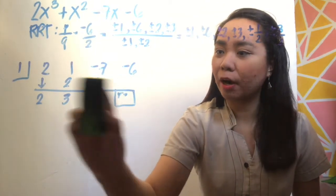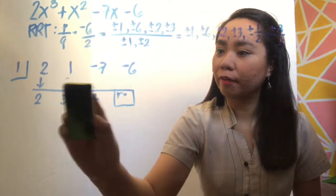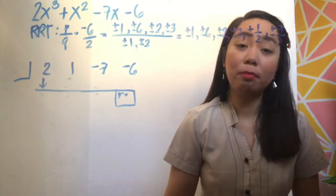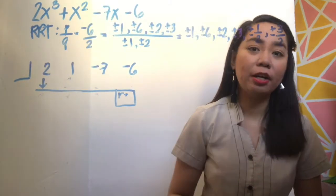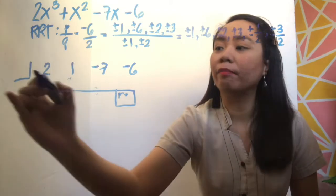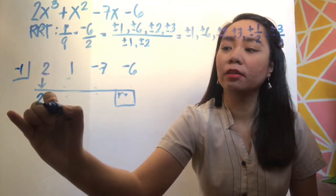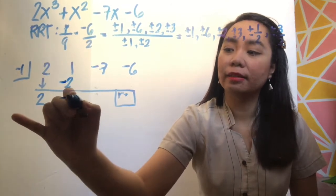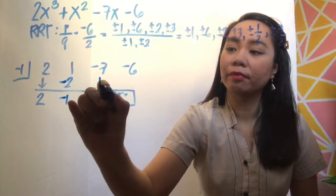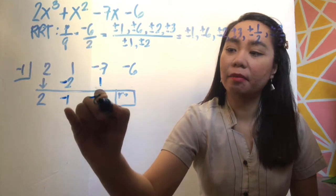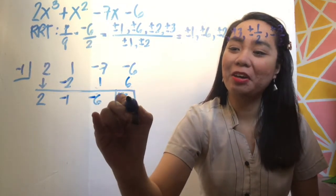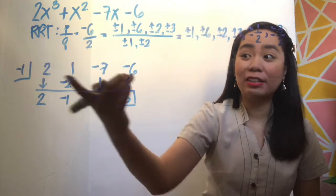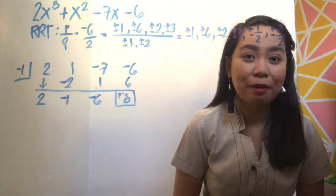Let's erase that and try another possible root. Let's try negative 1. Bring down, multiply, add, multiply, add, multiply — and you have a remainder of 0. Good news: we already found the first root.